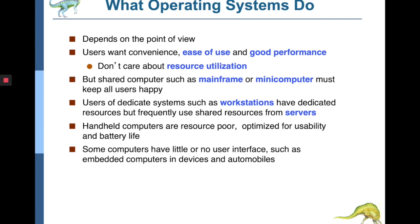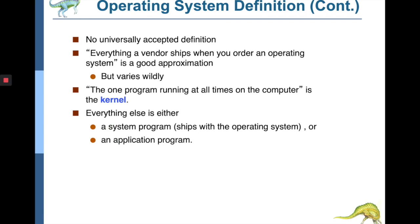An operating system is a resource allocator — it manages all resources. It is also a control program that controls the execution of programs to prevent errors and improper use of the computer. Its requirements are to manage hardware by allocating resources properly to each program, and also to stop and secure the system so that a user program does not intrude into the operating system or make improper use of it. There are mechanisms for that.